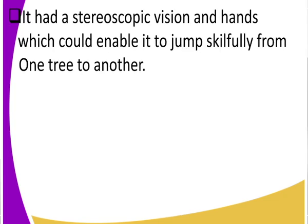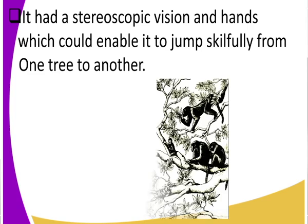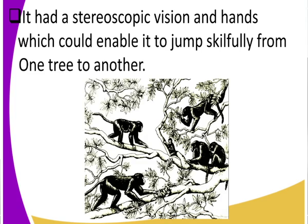Looking at its vision and its hands — the hands could enable it to jump skillfully from one tree to another. Since it lived in forests, the hands gave it the ability to move between trees. You can see the Aegipithecus jumping from one tree to another. The hands were free and flexible, and it also had stereoscopic vision.